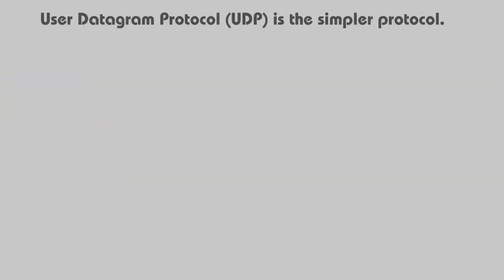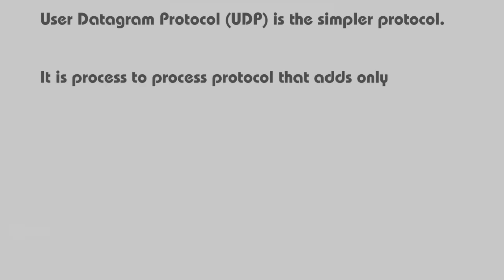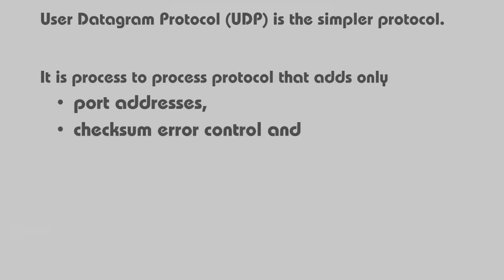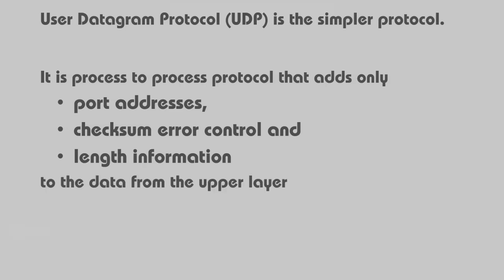UDP is the simpler protocol. It is a process-to-process protocol that adds only port addresses, checks some error control, and adds length information to the data from the upper layer.